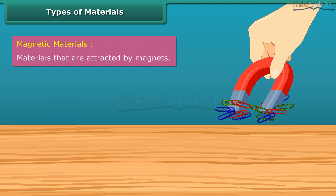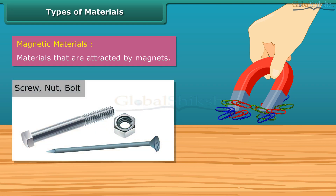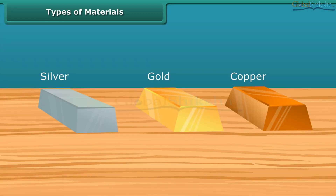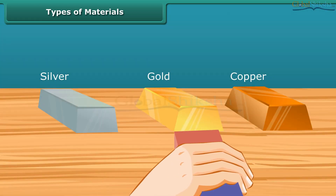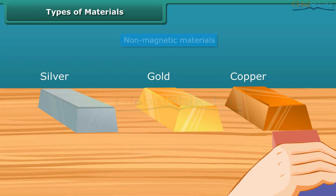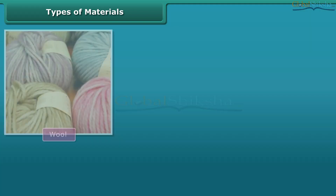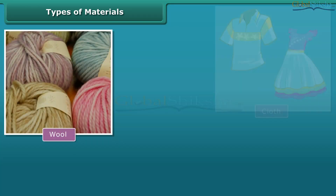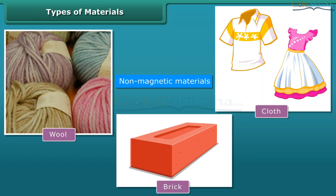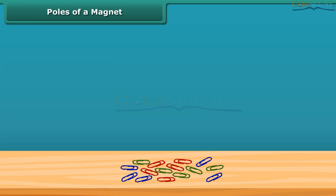Now let us look at the types of materials. Materials that are attracted by magnets are called magnetic materials — for example, screws, nuts, and bolts. Materials that are not attracted by magnets are called non-magnetic materials — for example, rubber, cloth, and bricks.